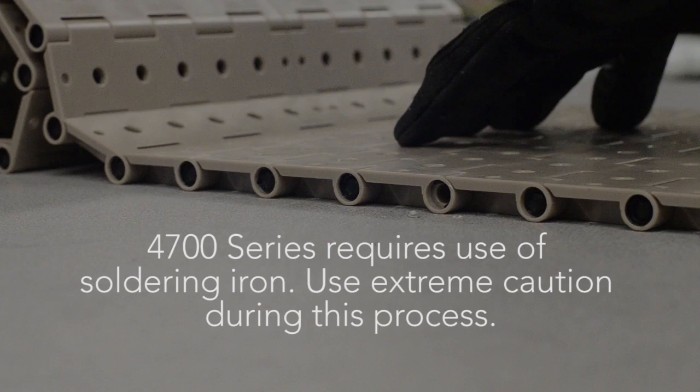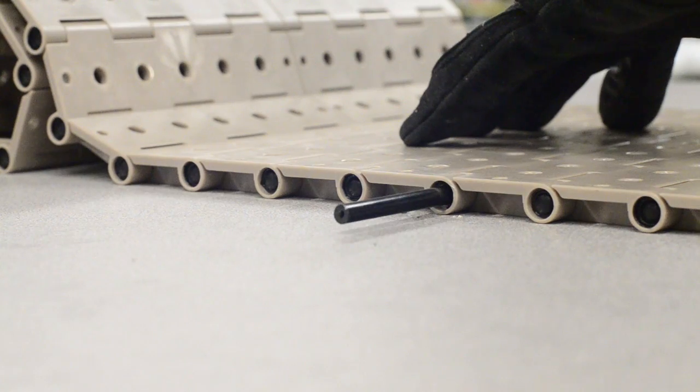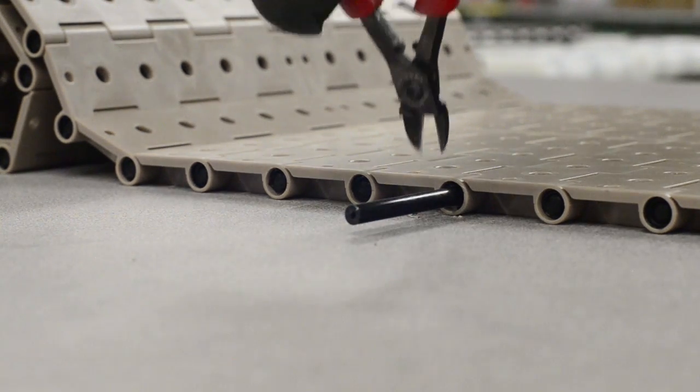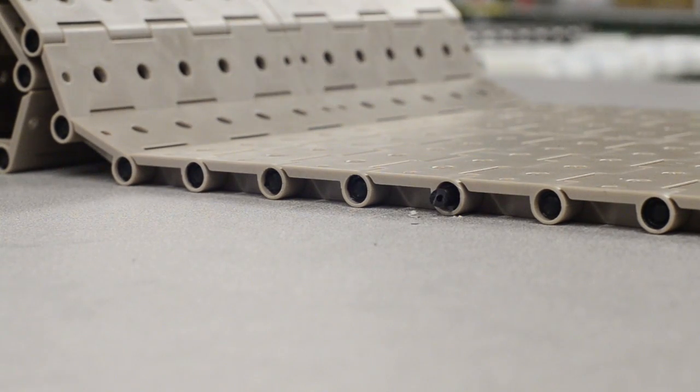The 4700 chain series is the only chain series that requires customers to use a soldering iron to reestablish the pin retention. First, warm up the soldering iron. Then take the pin and fit it into the 4700 chain. Take a wire cutter and cut the access pin length to around one quarter of an inch away from the chain.